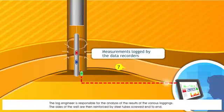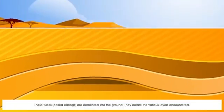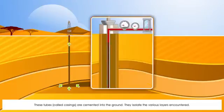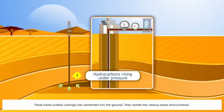The sides of the well are then reinforced by steel tubes screwed end to end. These tubes, called casings, are cemented into the ground. They isolate the various layers encountered.